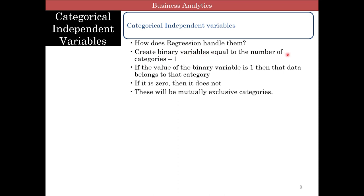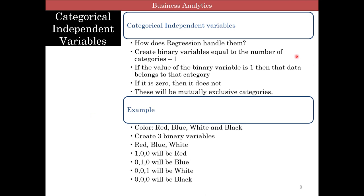So how does regression deal with them? The way we deal with them in regression is we create binary variables which is equal to the number of categories minus one. So if you have four categories, you create three binary variables. If the value of the binary variable is one, then the data belongs to that category. Otherwise, it's not. And these are mutually exclusive categories. So you can either have something with category A or B or C, but you cannot have them A and B.